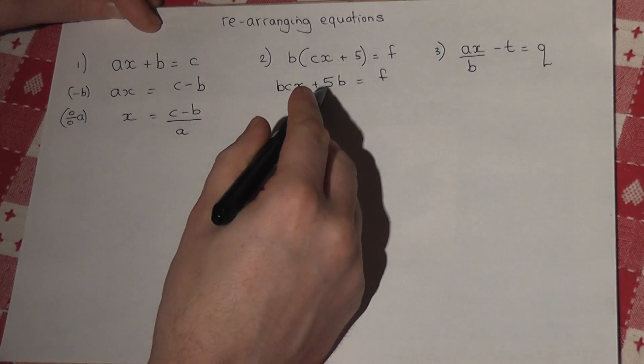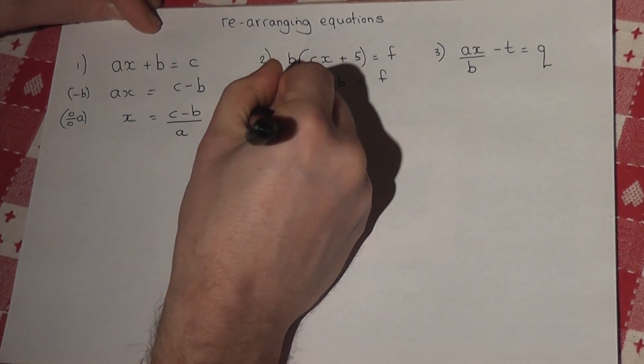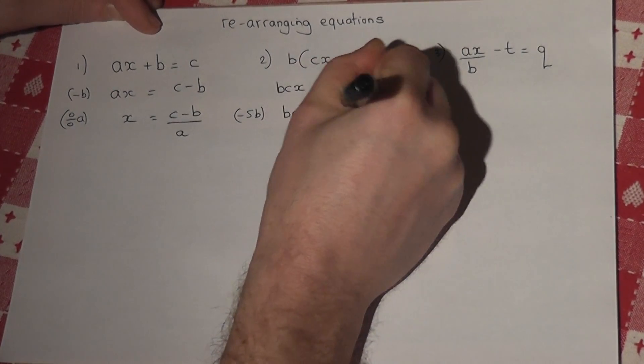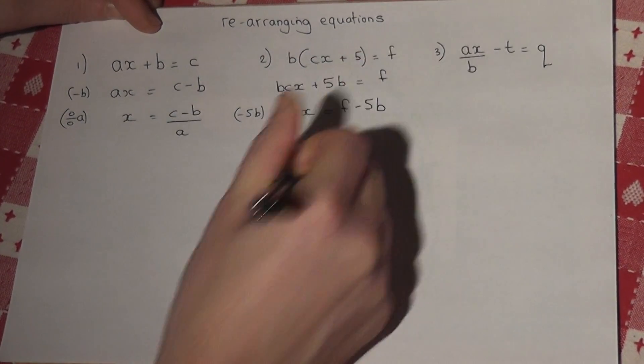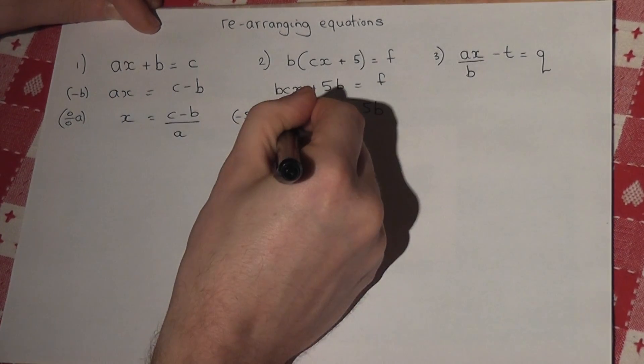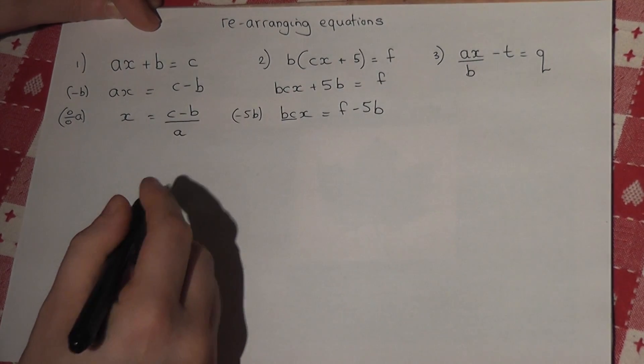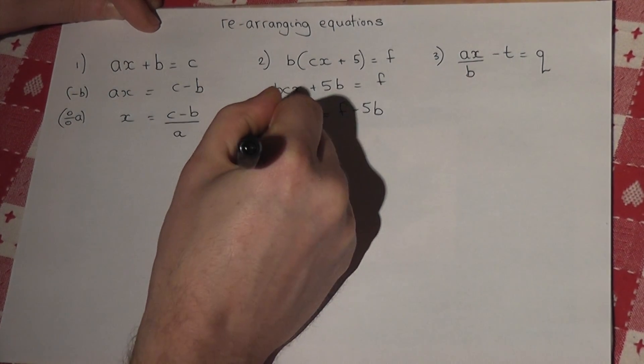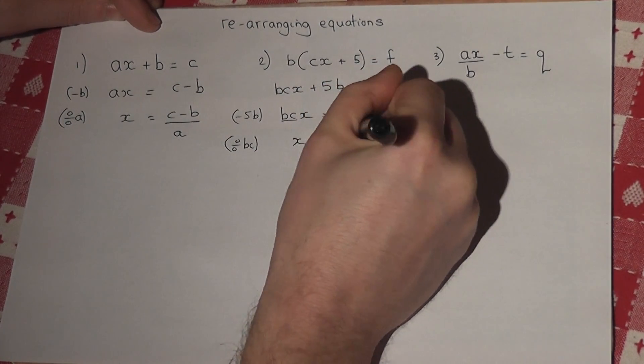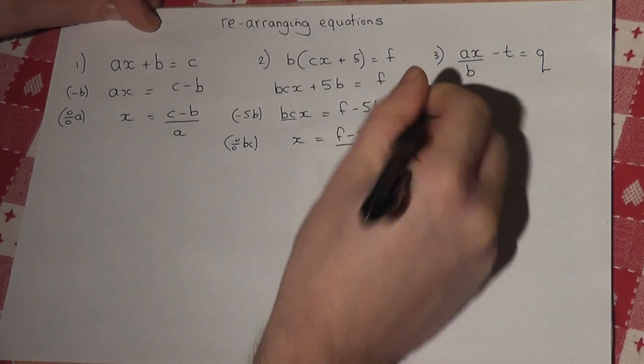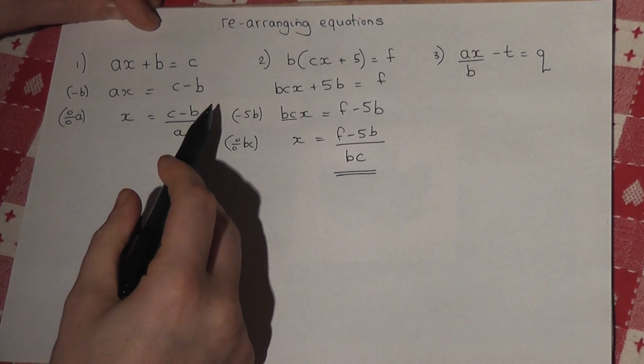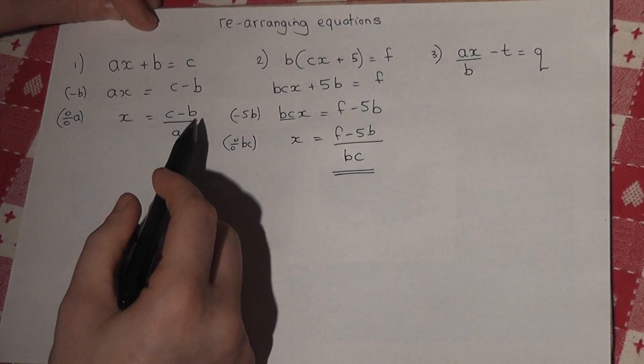I would then have to take away the 5b to get the x term by itself. So bcx equals f take away 5b. And then here I divided by a, here I divide by the entire coefficient, which is bc. So x just equals f take away 5b all over bc. I find the expansion to be the best way to solve those sort of equations.